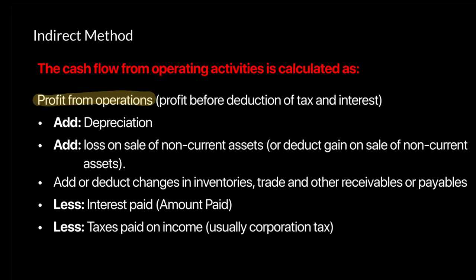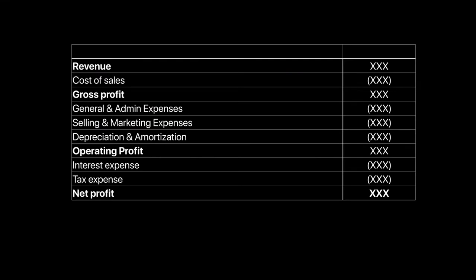Let's look at the income statement first. A simple income statement has your revenue, cost of sales, gross profit, then you subtract operating expenses. After subtracting that you calculate your operating profit. Under the indirect method you will start with this operating profit figure. You then have to remove all the non-cash items that are included in this half of the statement.